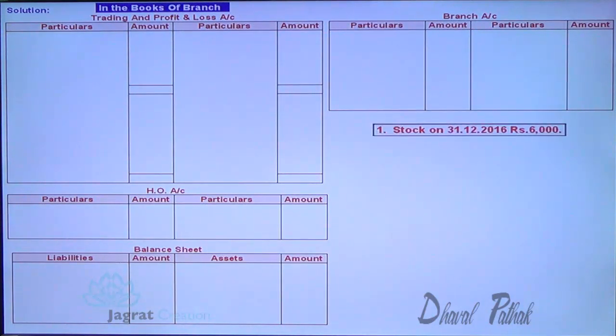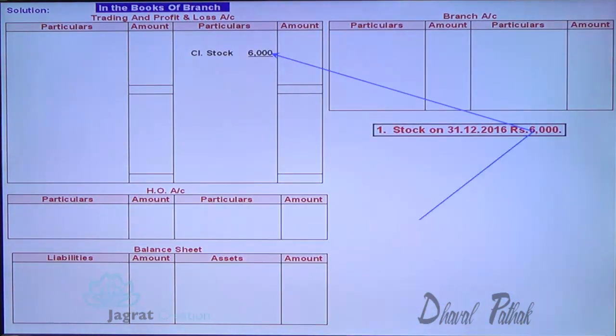The first adjustment is for closing stock. Closing stock is credited to the trading account and placed on the asset side of the balance sheet — these are the two effects of the adjustment.